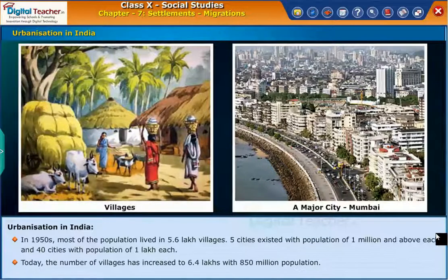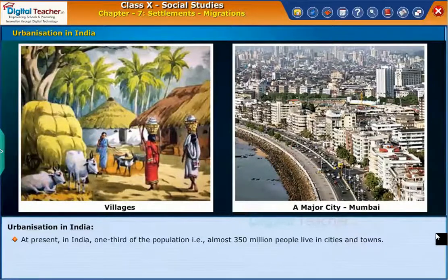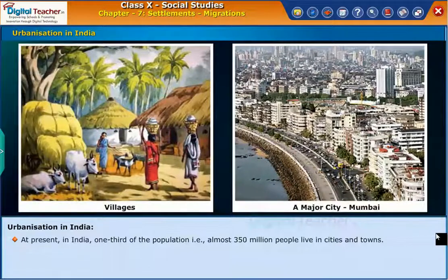Today, the number of villages has increased to 6.4 lakhs with 850 million population. At present, in India, one-third of the population, that is almost 350 million people, live in cities and towns.